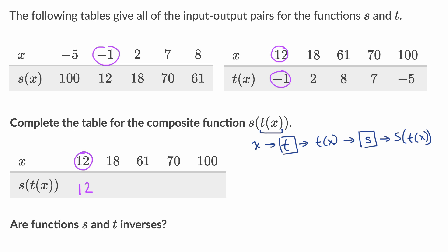Now let's do the next one. So when we input 18 into t, the 18 is the input, t of 18 is two. And then if we want to input that into s, so this is going to be the input into s, the output is 18. Very interesting. All right, let's keep going.